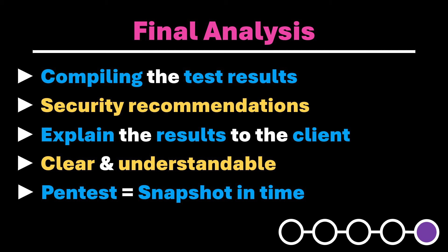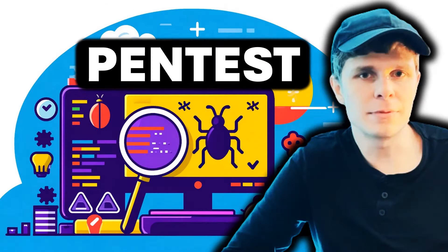In bug bounty programs, some kind of write-ups are submitted to the company, describing the problems found and how they can be reproduced. Often, specific forms are provided on the company's website, allowing the bug bounty hunter to precisely define the area where the security gap lies. This allows direct internal referral to the appropriate expert. Each of these phases is crucial for the success of a pen test and contributes to enhancing the security of an application or an entire organization.